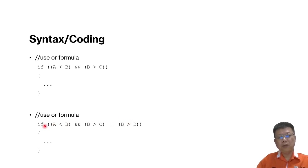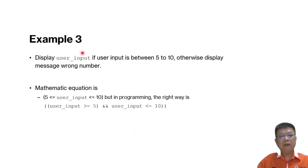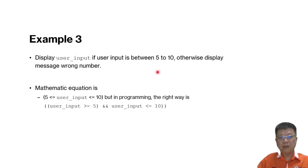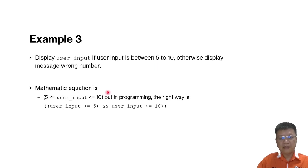Programming always goes from top to bottom and left to right. For example three: display the user input if it is between five and ten; otherwise display 'wrong number.' In mathematics we write this as 5 ≤ x ≤ 10, but in programming we cannot write it in that form.